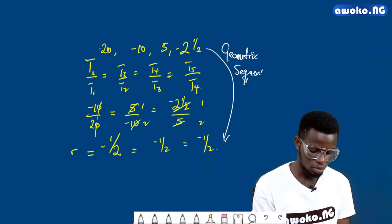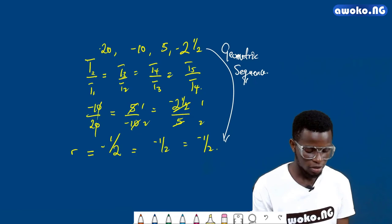That is how we can illustrate whether a sequence is geometric. This was just the introduction to the geometric sequence. In the next class we will discuss the nth term of a geometric progression. Till we meet again, bye.